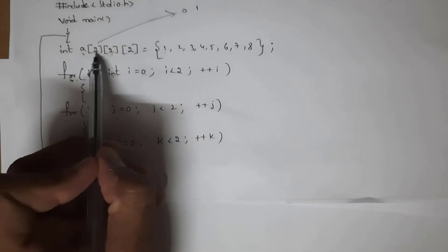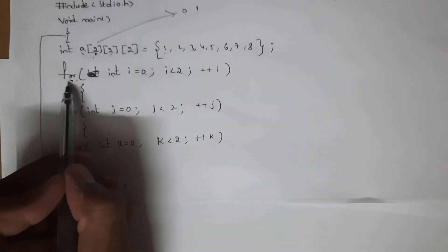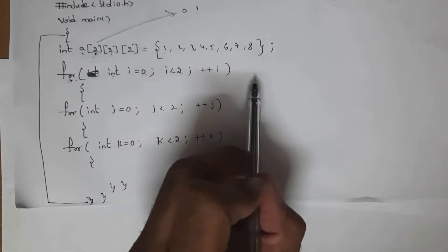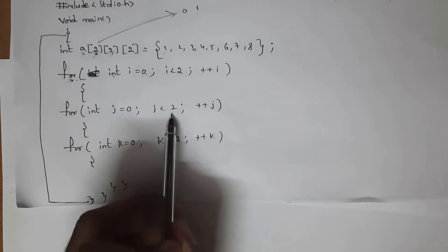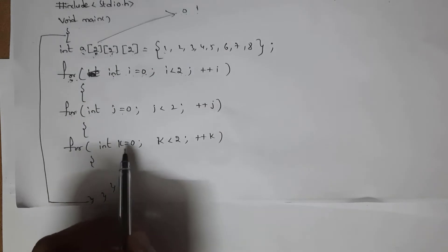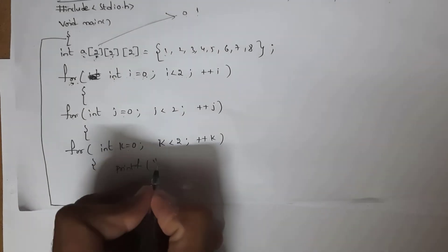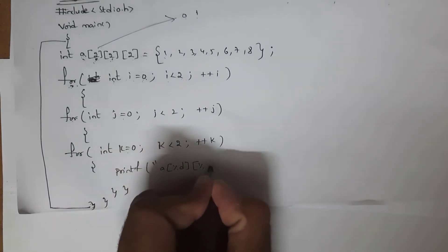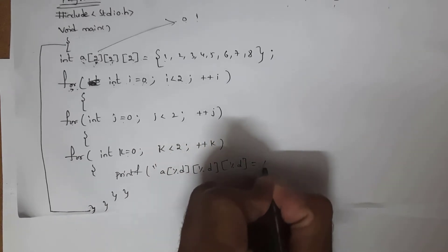The size is two, meaning it will store two elements: the first element at index zero and the second element at index one. I written: for(int i=0; i<2; i++). Similarly for the second dimension: for(int j=0; j<2; j++). And for the third dimension: for(int k=0; k<2; k++). Inside this we need to write printf with format a[%d][%d][%d] = %d for the first, second, and third dimensions.